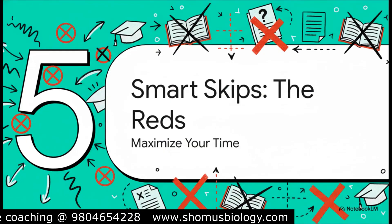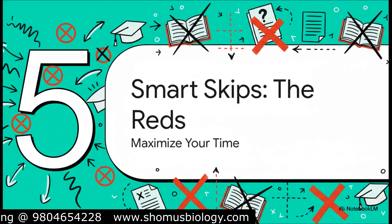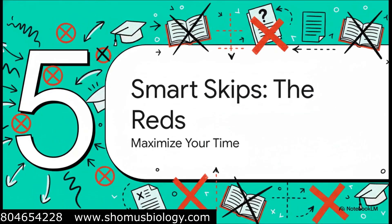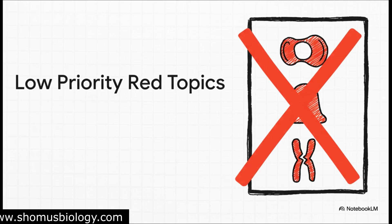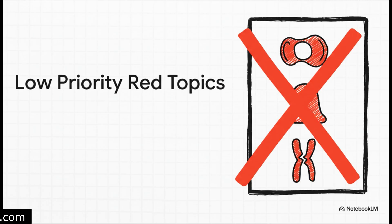Now this part is just as crucial as knowing what to study — a truly smart strategy is also about knowing what not to study. Topics like extra-chromosomal inheritance, quantitative genetics, and chromosomal alterations are incredibly rare in recent exams. They might have been a big deal in the past, but the current trend says they are very low yield. Spending a lot of time here is just not an efficient use of your limited prep time.